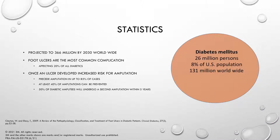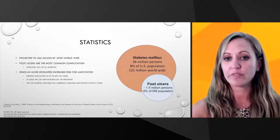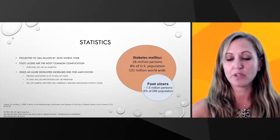Foot ulcers are affecting about 20% of all diabetics. The even more scary statistic is that once an ulcer develops, there is an incredibly high increased risk for amputation. About 85% of all cases that end in amputation first have an ulcer that precedes it. Foot ulcers affect about 1.5 million people a year.